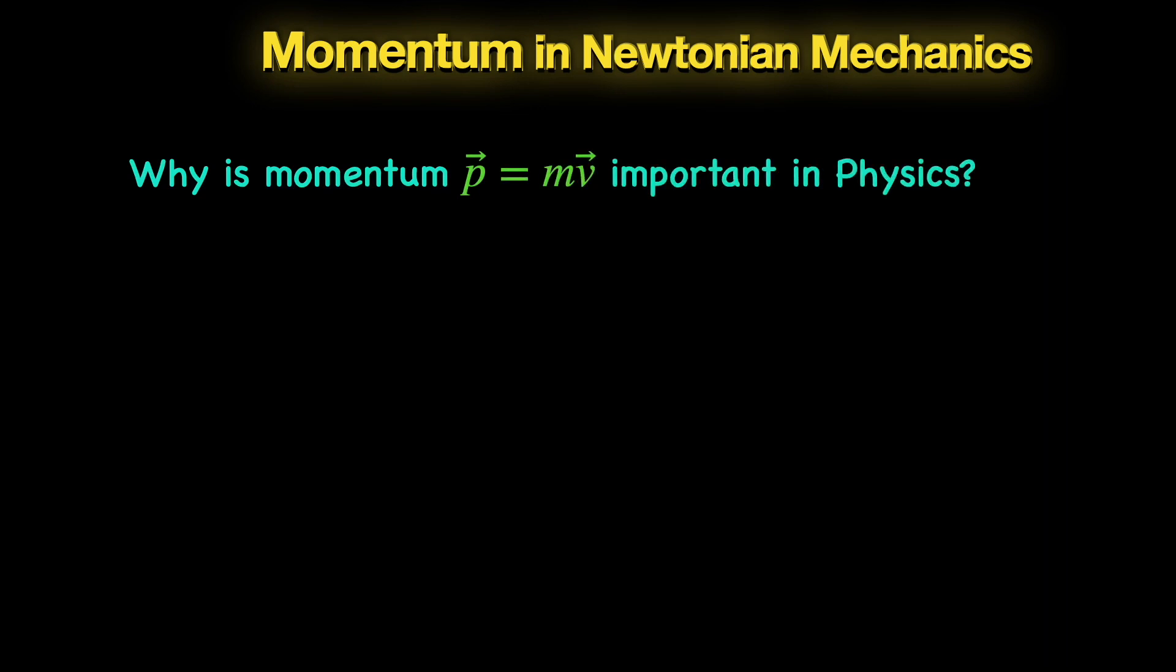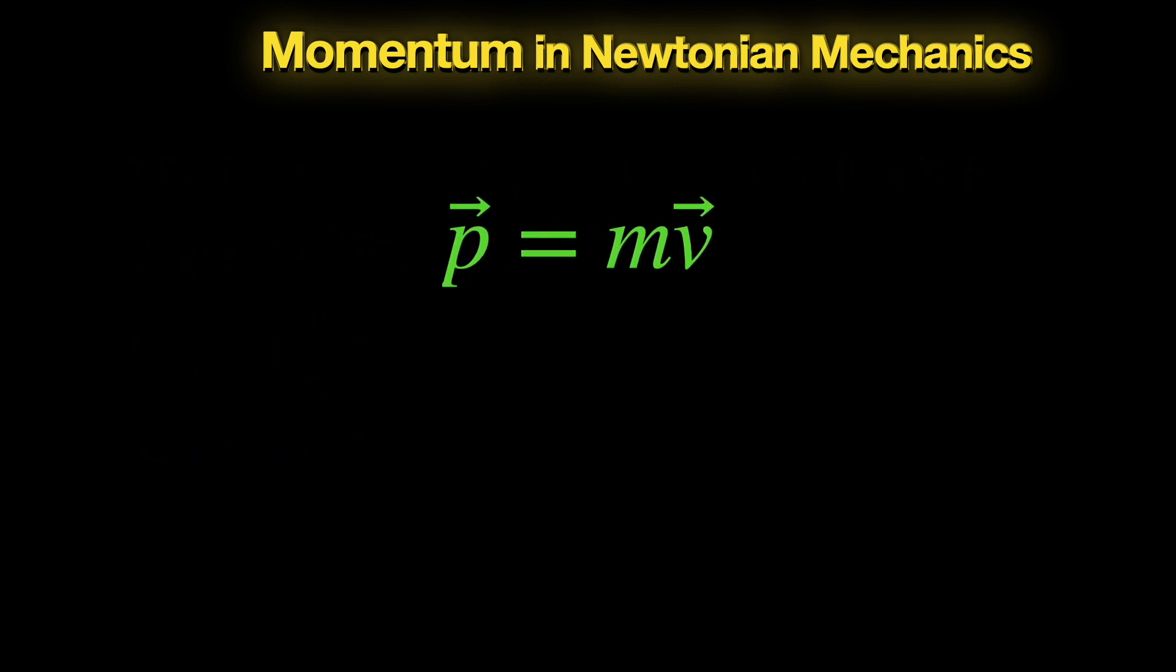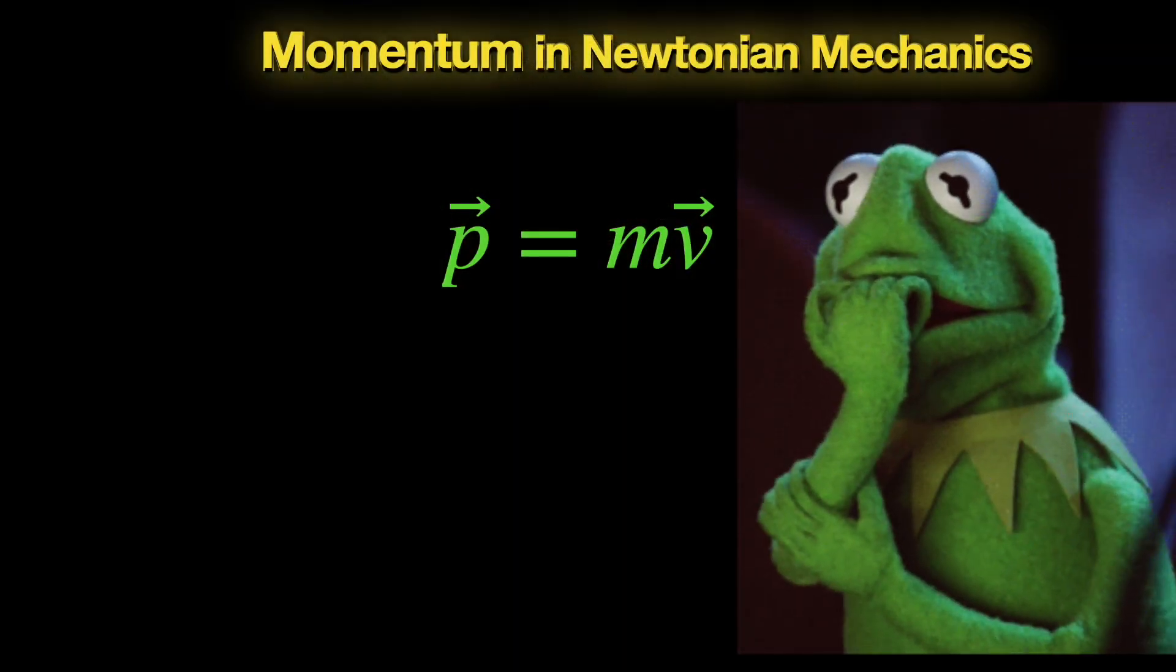If this seems trivial to you, just ask yourself: how do I know that for a moving particle, its mass times velocity is an important quantity that we must keep track of? We do not care about m squared v or v by m and so on. What is so special about m times v? If you already know the answer, great, put it down in the comment section. In case you don't, here is why.